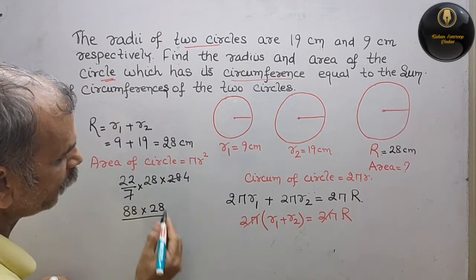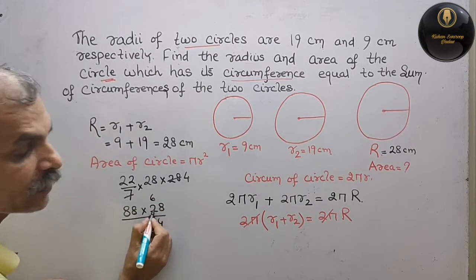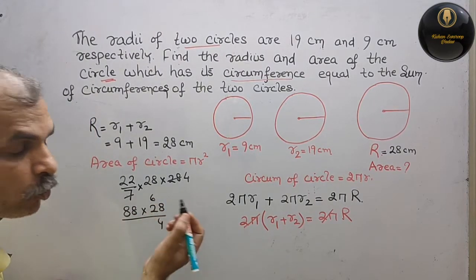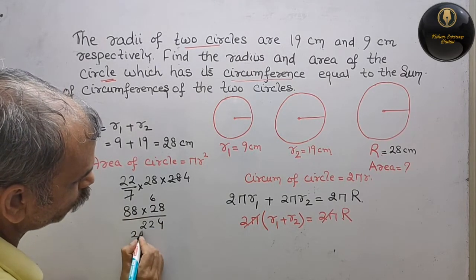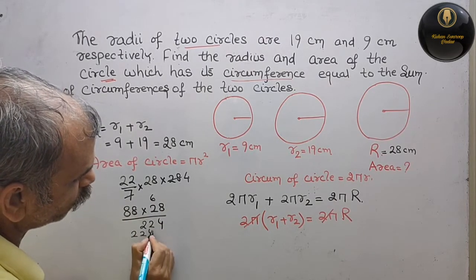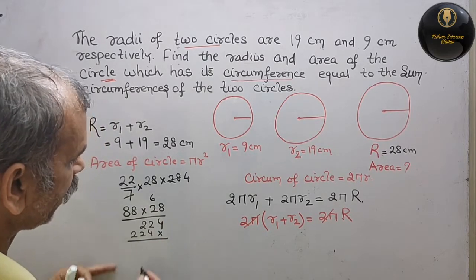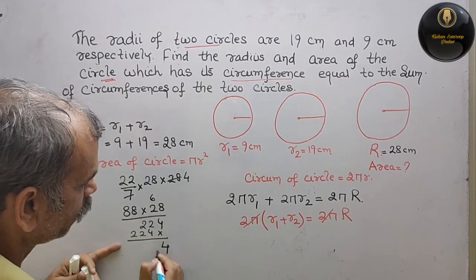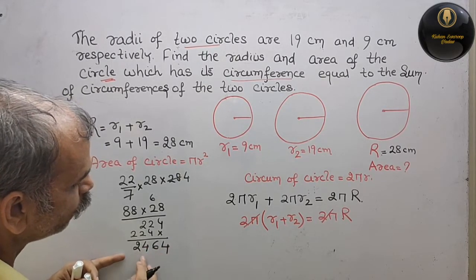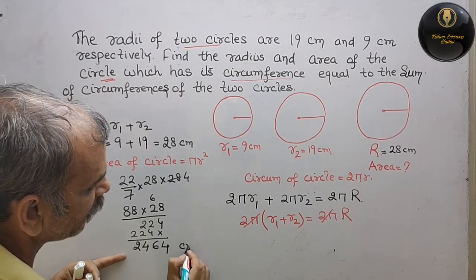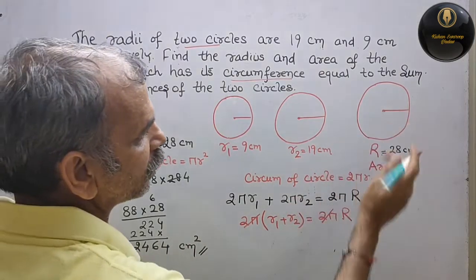Toh 8 into 8 is 64, 8 into 16, plus 6 is 22. Toh aapka answer dekho kitna aa raha hai — 2464 cm square is your area of the circle.